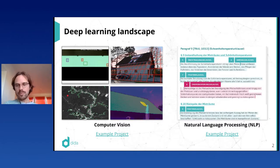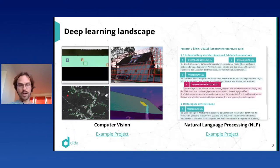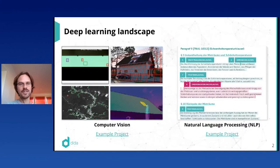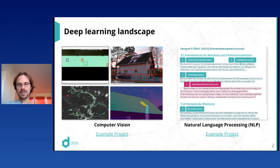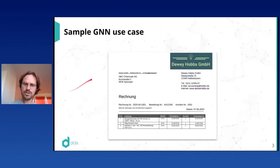Those two camps have very specialized sets of tools and models, and they work very well. But of course those are far from the only interesting problems we could tackle with data science, so it would be very interesting to have more generic, more flexible deep learning models — and this is exactly where graph neural networks come in.